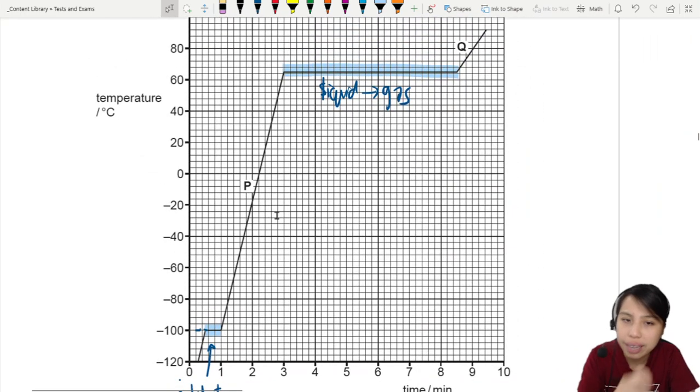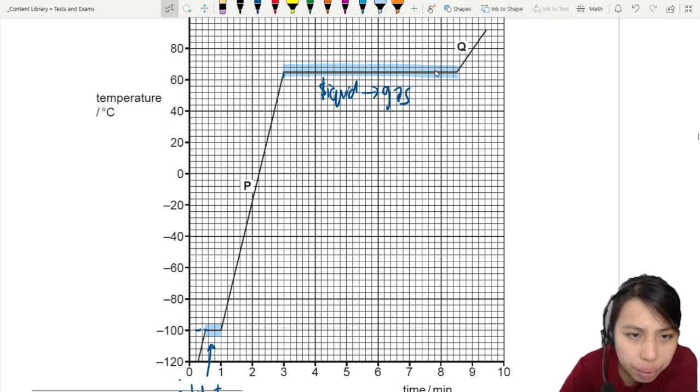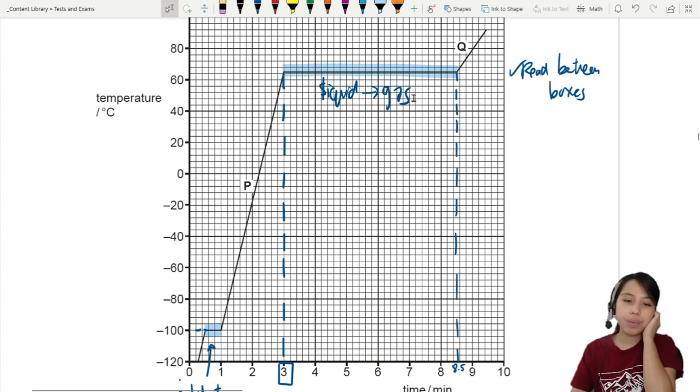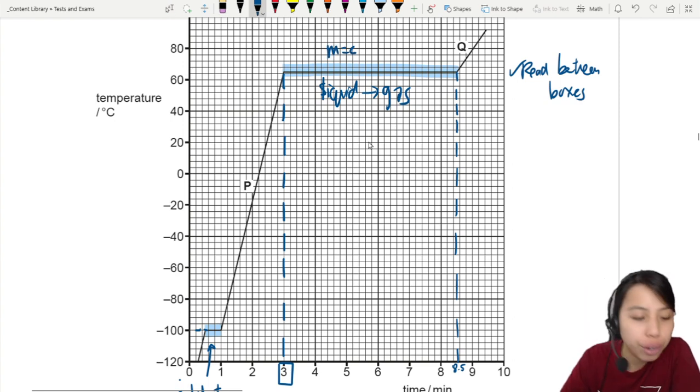So this first point where it starts to become gas is three minutes. And it ends somewhere, so it's like halfway. Paper 4 you can read halfway. Read between boxes. Yes. You can do that for paper 4. So this is going to be halfway. So that's 8.5. It takes this long to completely vaporize our mass of 0.045 kg of this thing.